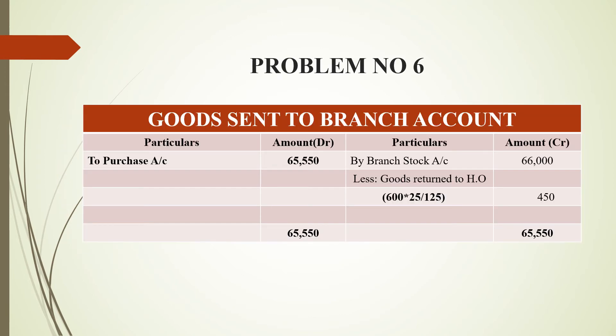For the previous transaction, goods sent to branch is 80,000. For the branch stock account, the amount is 66,000. If you want to make your invoice price, that means the zip loan price — 66,000. This is completely an invoice price. For goods return to head office, we will use the invoice price.